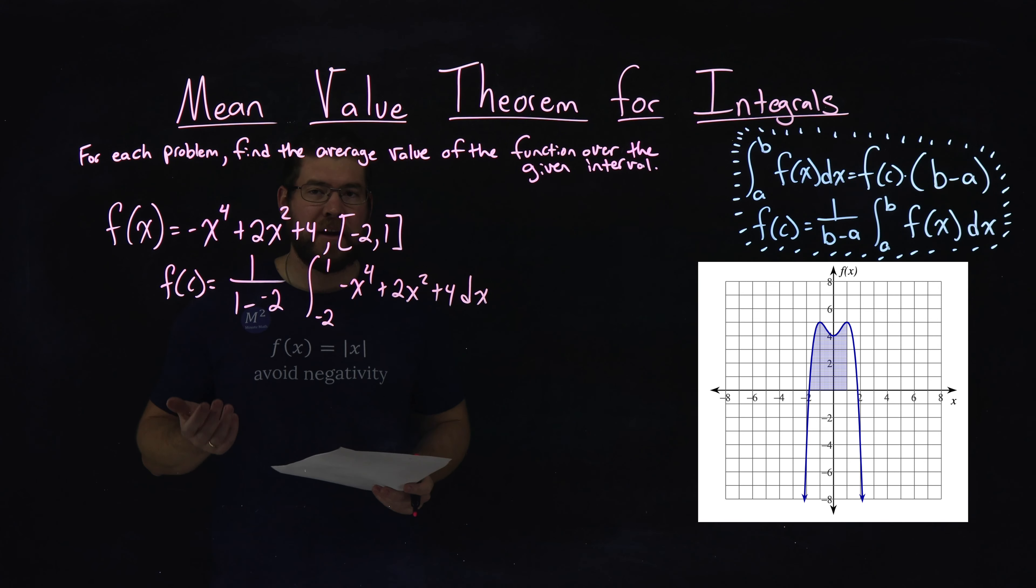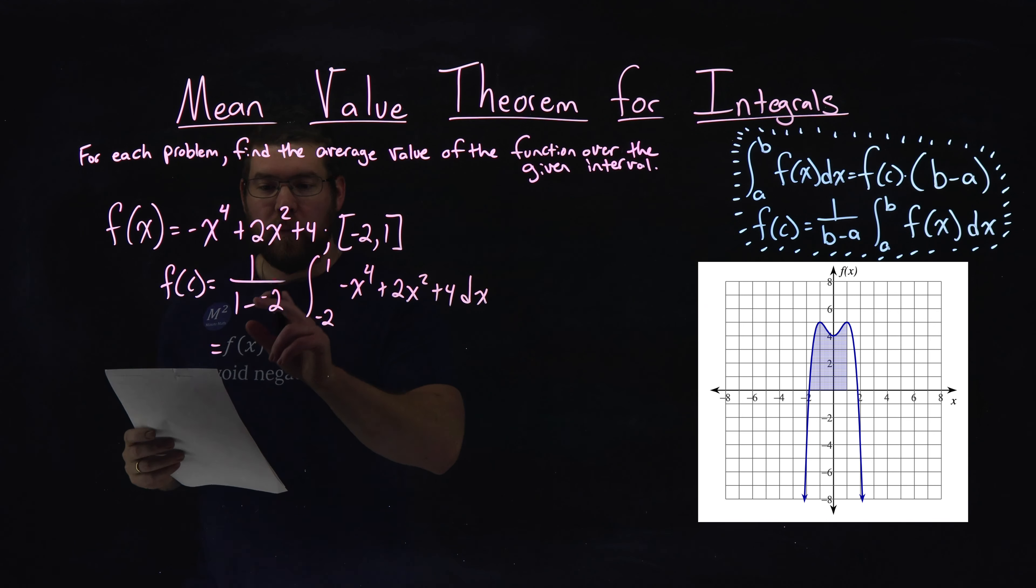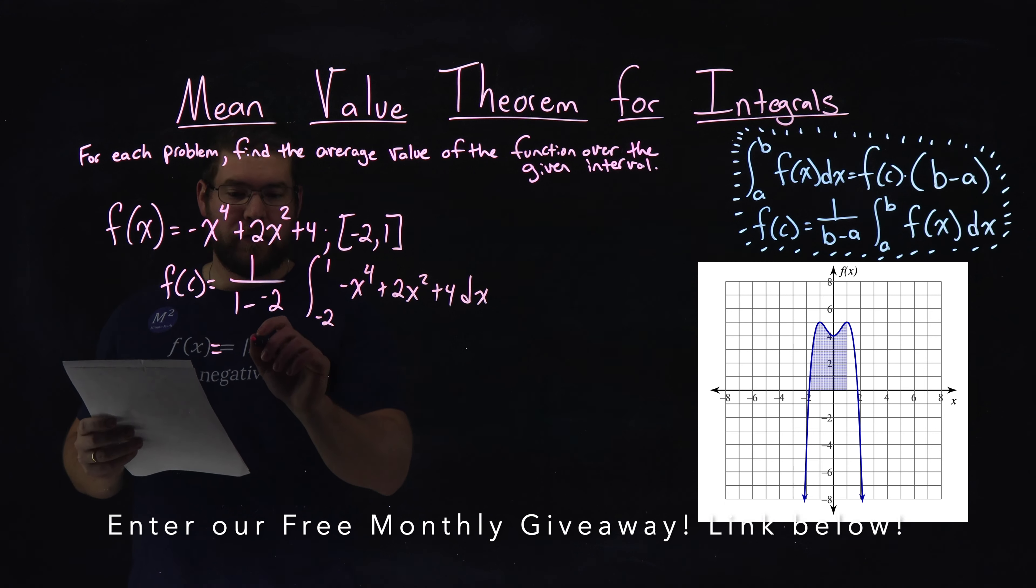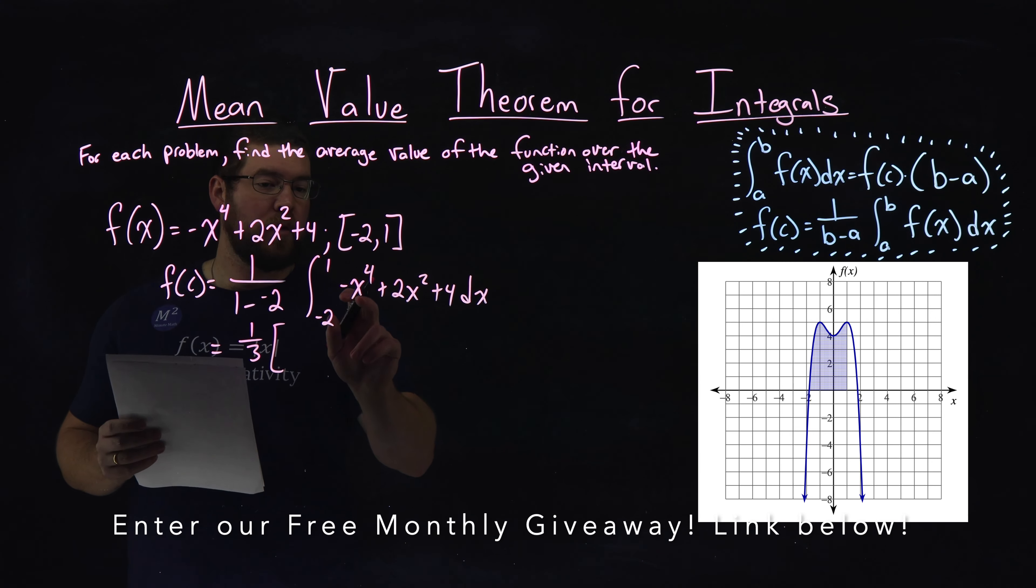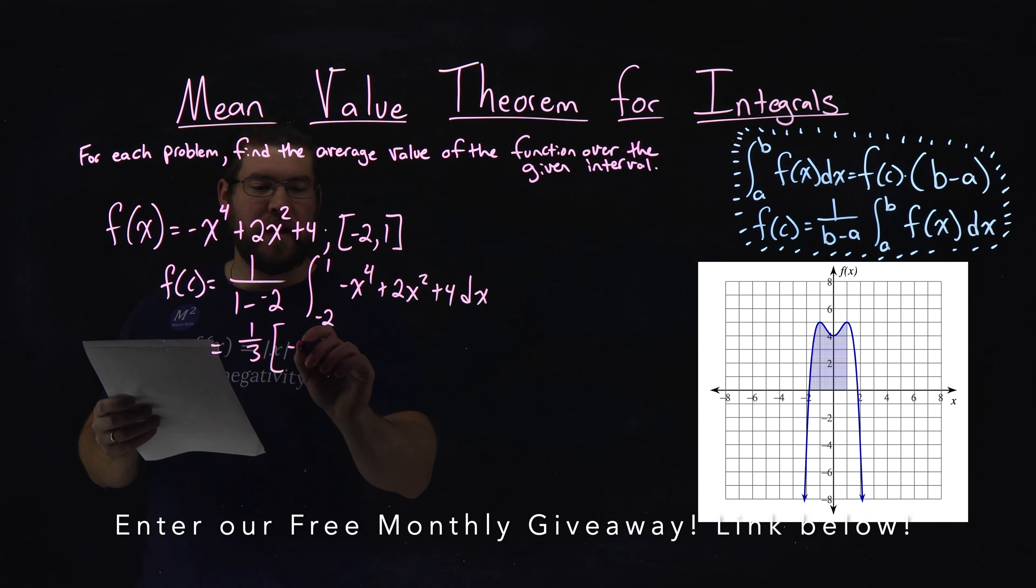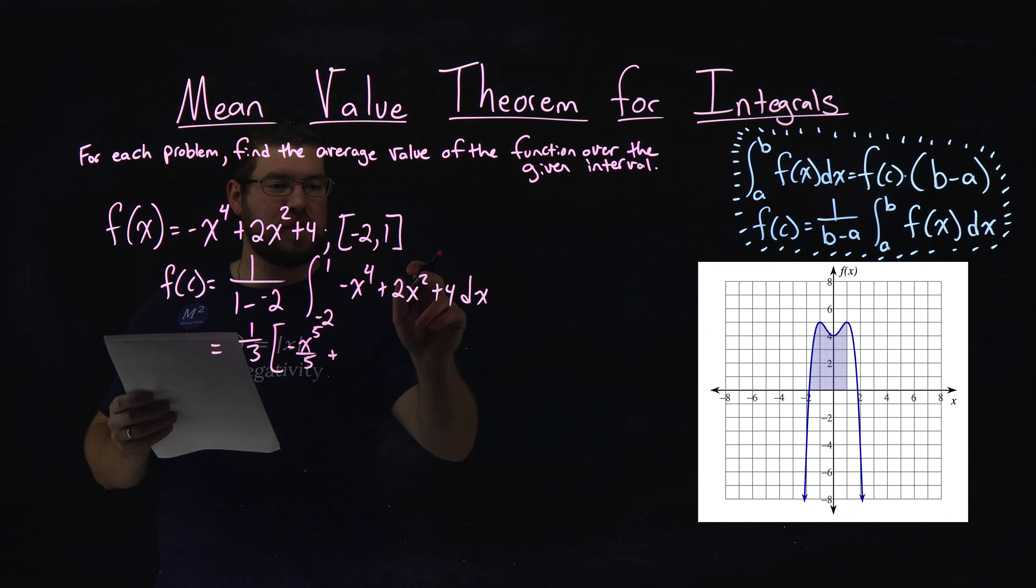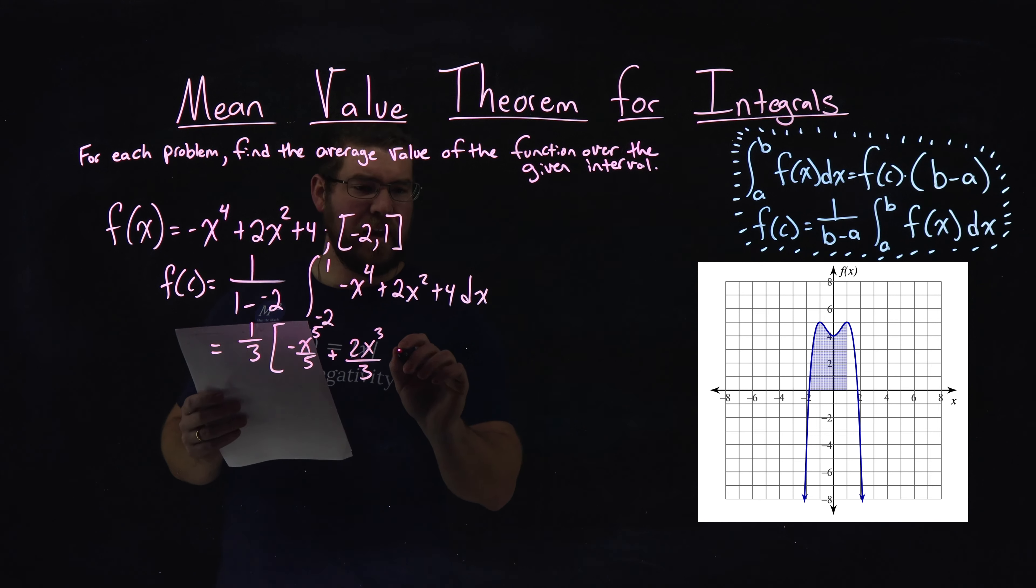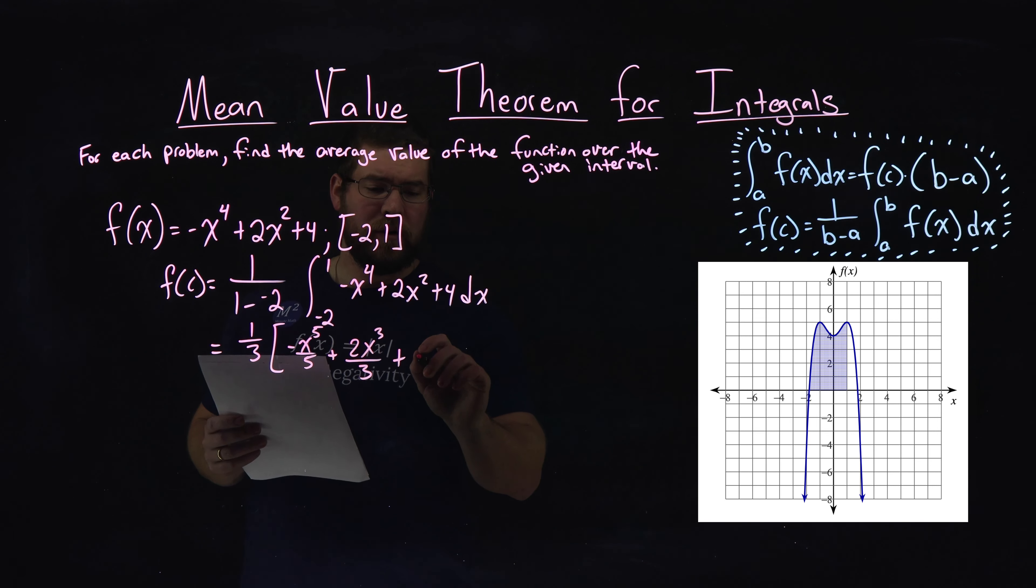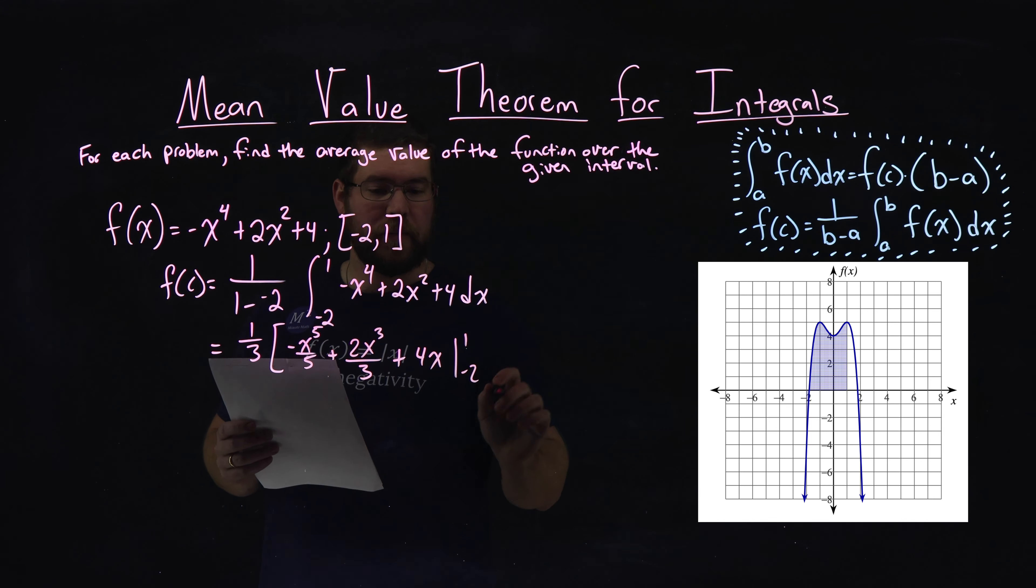All right, so now that we have it set up, we just solve it. So 1 minus negative 2 is plus a positive 2, so we have 1 third out front here. Taking the integral here of negative x to the fourth, we have negative x to the fifth over 5, plus 2x squared becomes 2x to the third power over 3. Then integral of 4 is 4x, and we're integrating this from negative 2 to 1.